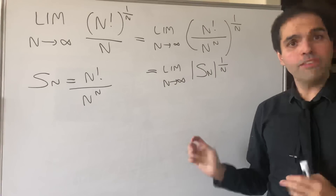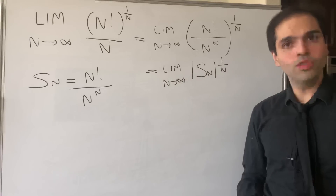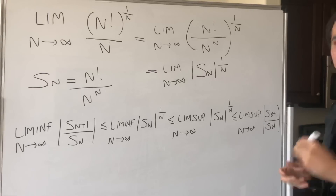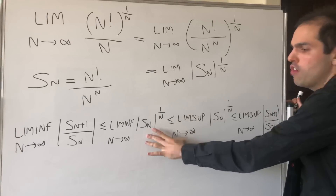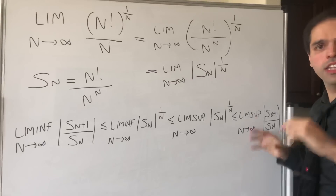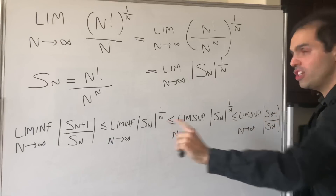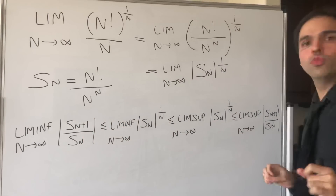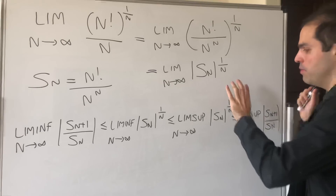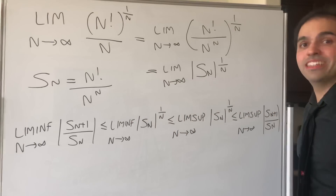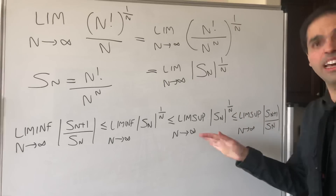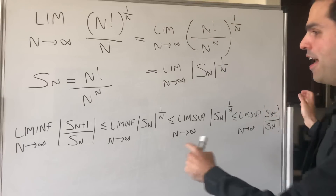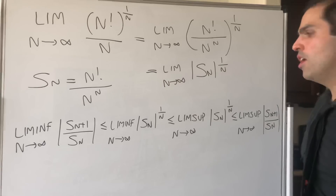In the previous example the pre-ratio test was useful, so let's use it again — but this time the full version. Here is the full version of the pre-ratio test, which says that the limits of the root terms are squeezed between the limits of the ratio terms. Ironically, this shows that the root test is better than the ratio test: if the ratio test converges, then the root test converges, so sometimes the root test can converge even if the ratio test is inconclusive. The point is to evaluate the limit of the nth root of S_n, so let's calculate the ratio S_{n+1} over S_n.